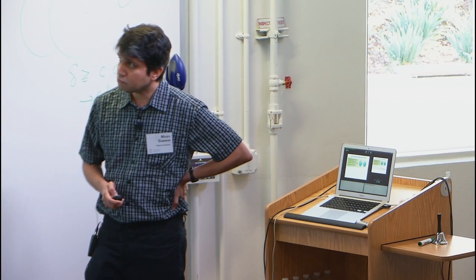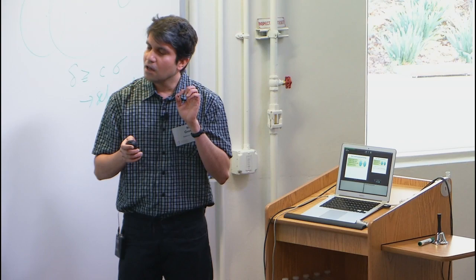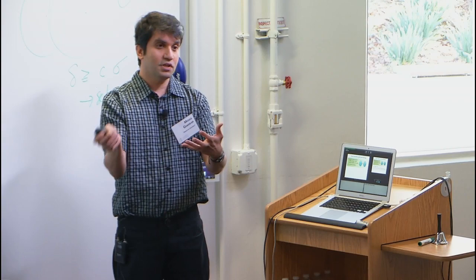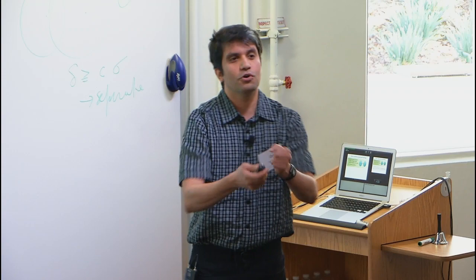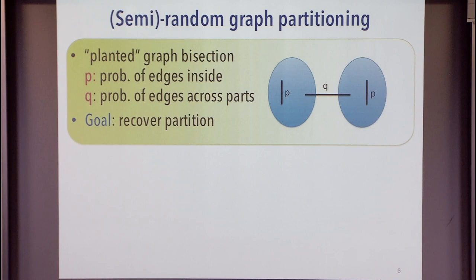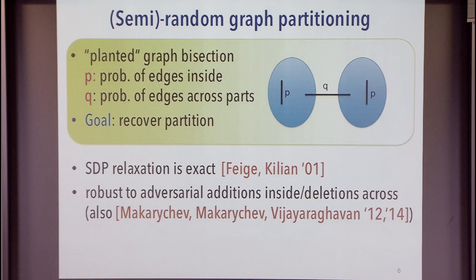Here's a model for graph partitioning. Imagine you have vertices divided into two groups — you don't know what these groups are. You build a random graph: inside groups, place edges with probability P; across groups, place edges with probability Q. You're given this random graph and your goal is to recover these groups. This model is called stochastic block models, and it's very well studied. In the theory community, this was studied by Feige and Killian in 2001, who showed the straightforward SDP relaxation for this is exact.